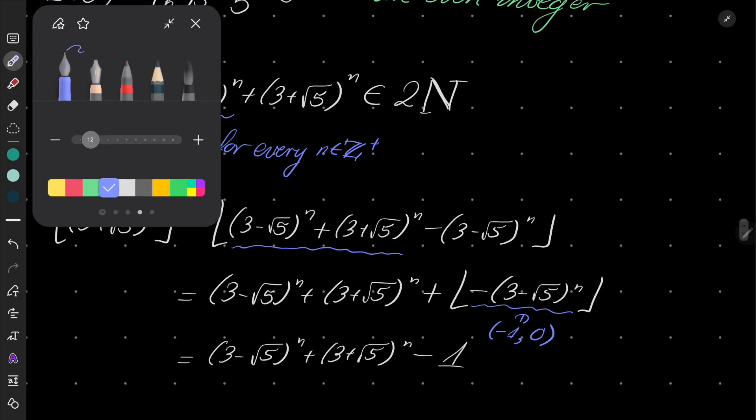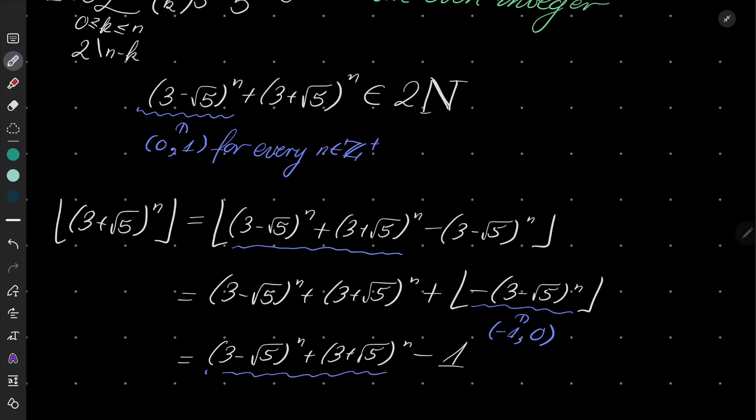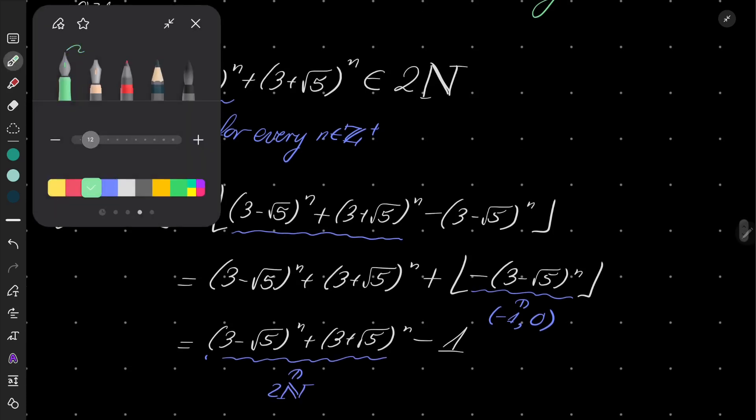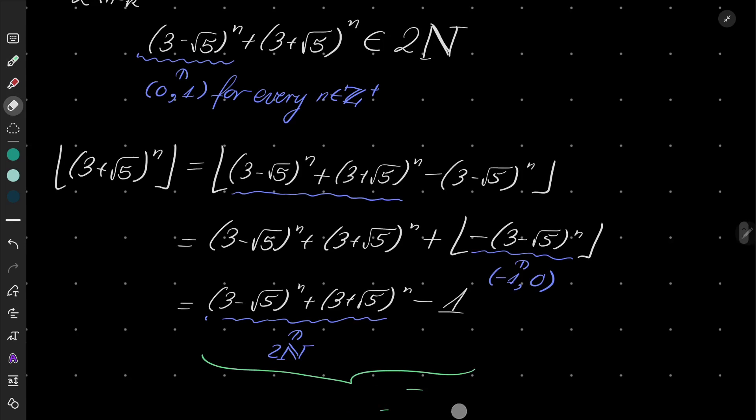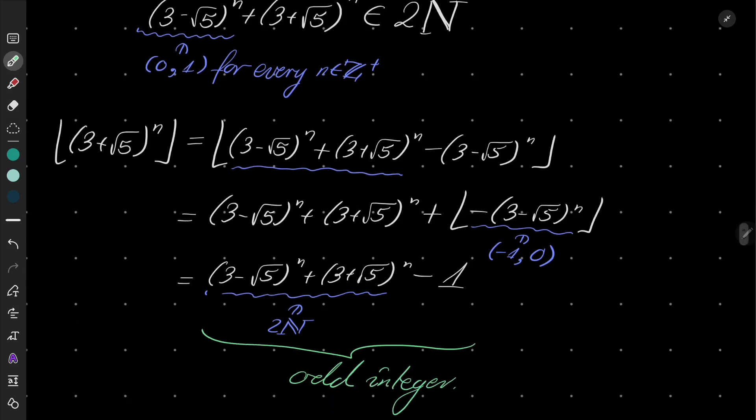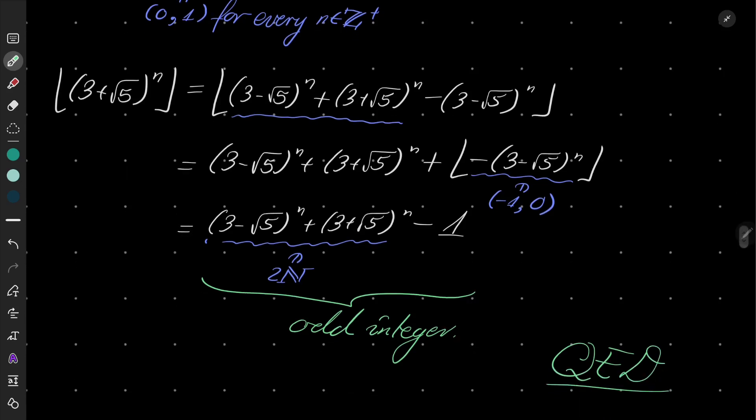And let's look. We have also established that this number is even. So if we subtract 1 from an even number, this entire number becomes odd. Odd integer, which closes our reasoning, because we exactly wanted to show that this floor of this number is an odd integer.